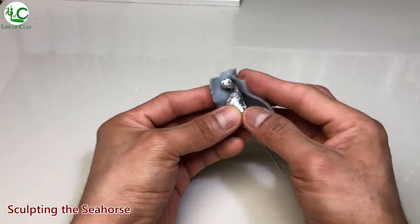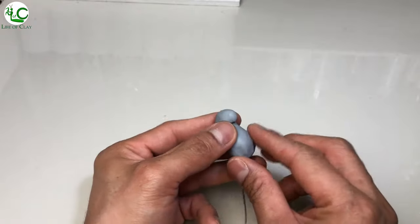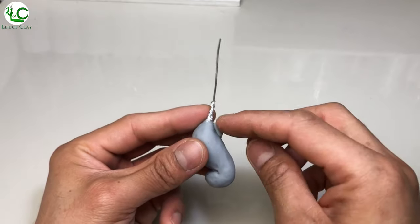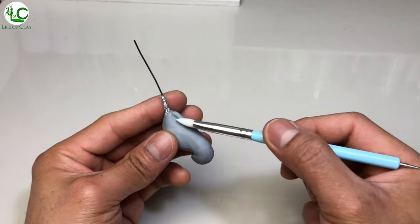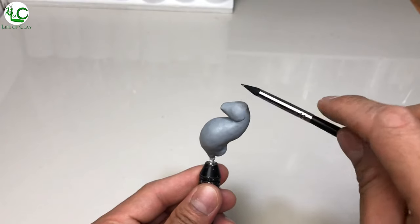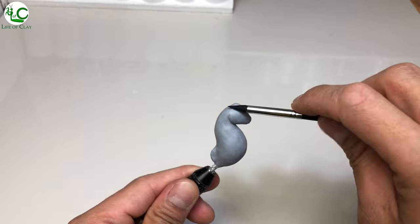Next, sculpting the seahorse. I just covered it up with a thin sheet of coarse clay and formed its basic shape. What I'm adding here is the base of its dorsal fin. Then shaping its head and adding all its details including the coronet, eyes, and some tubercles.